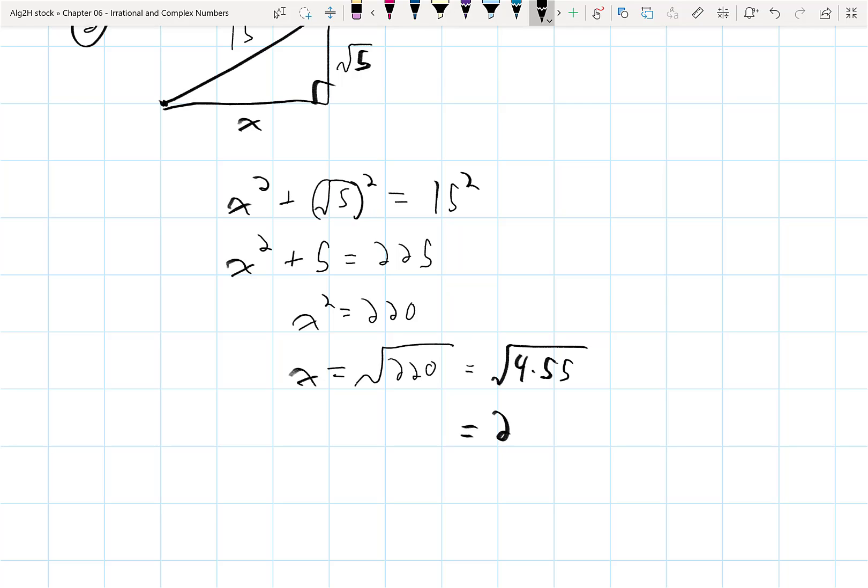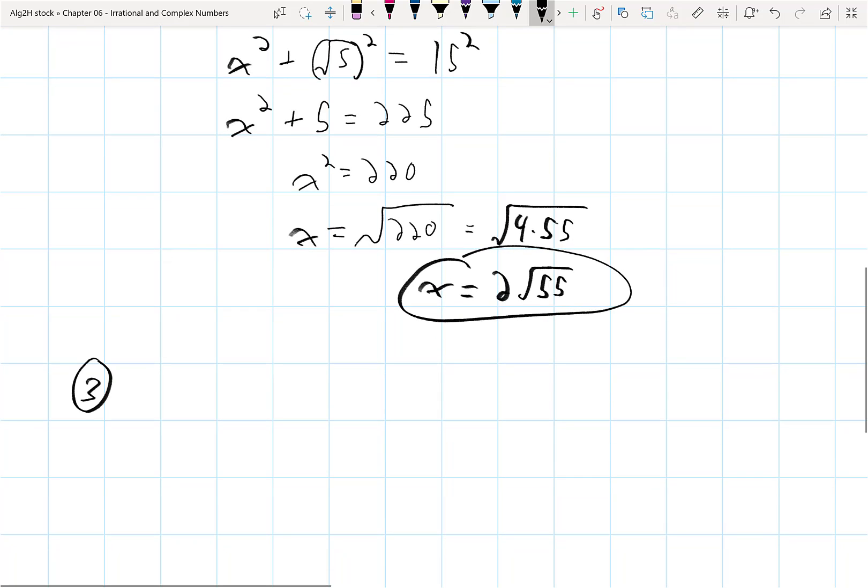Which would be equal to 2 root 55. 55 is made up of 5 and 11, and neither of those can be simplified. So let's do some examples with just more classic adding up of straight up radicals.